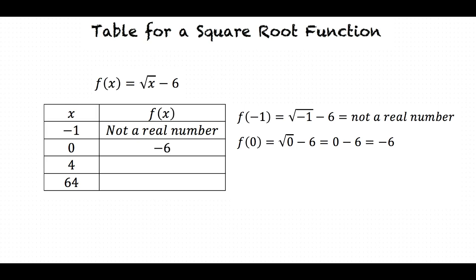Now let's solve f(4). f(4) is equal to the square root of 4 minus 6, which is equal to 2 minus 6 since the square root of 4 is 2. 2 minus 6 equals negative 4. So our third value, f(4), in the right-hand column of the table is negative 4.